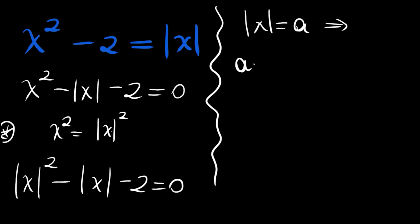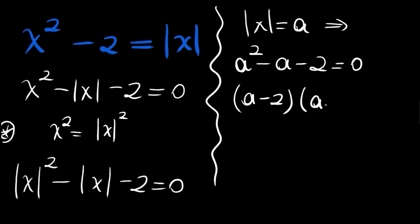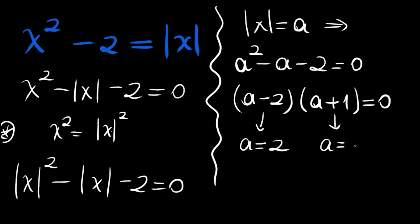So our equation becomes a squared minus a minus 2 is equal to 0. Factorizing this, we can write it as (a minus 2)(a plus 1) is equal to 0. So our roots here are a equals 2 and a equals minus 1.